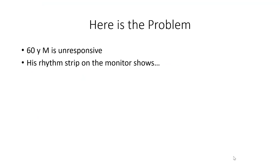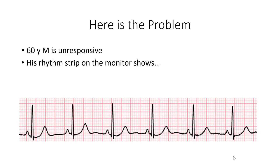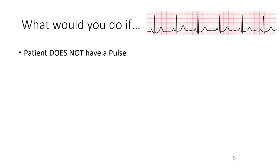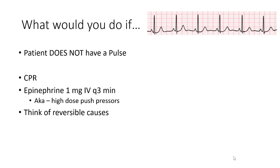Here's the problem. If a 60-year-old male is unresponsive in the resus room and is hooked up to the monitor and the monitor shows a sinus rhythm, your next step should be to feel for a pulse. If the patient does not have a pulse, you would follow the ACLS guidelines for PEA — start CPR, give a milligram of epinephrine IV every three minutes, and think of your reversible causes known as the H's and T's. If you did that, the patient will survive less than 5% of the time, probably closer to 2–3%.